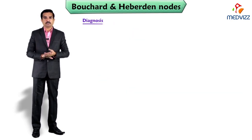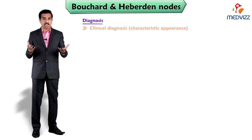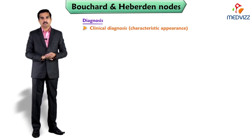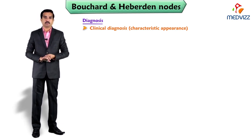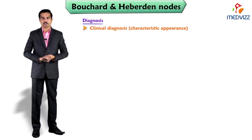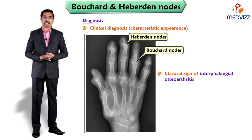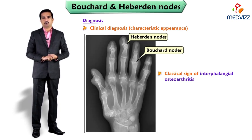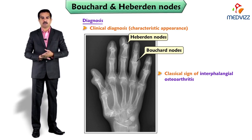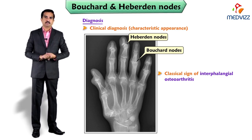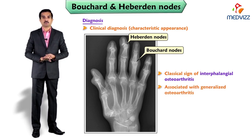The diagnosis of Heberden or Bouchard nodes is usually made clinically due to their characteristic appearance, and imaging may be performed on the affected digit. Bouchard and Heberden nodes are a classical sign of interphalangeal osteoarthritis and are associated with generalized osteoarthritis.